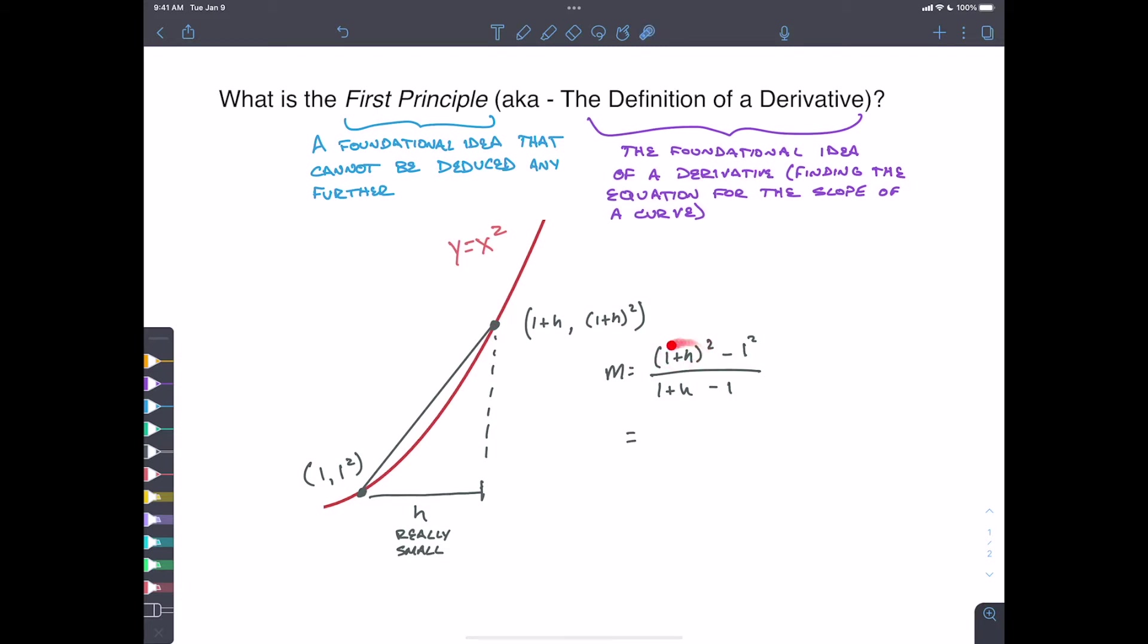All right. So we end up with a value of here. Let's see, this one plus h squared. That goes back to the idea of binomial expansion. So you may want to go back and double check that to review that piece as well.